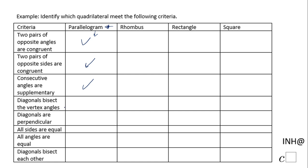Diagonals bisect the vertex angle — be careful, that is not true for all parallelograms, just for some special ones. The diagonals are perpendicular — not really. All sides are equal — no. All angles are equal — no. And the last property: diagonals bisect each other — that works for any parallelogram.